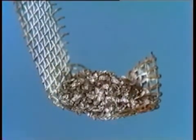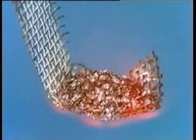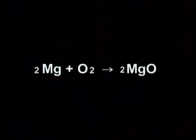When magnesium burns in atmospheric oxygen, a white powder is produced, magnesium oxide. The chemical equation for this process is magnesium plus oxygen makes magnesium oxide.